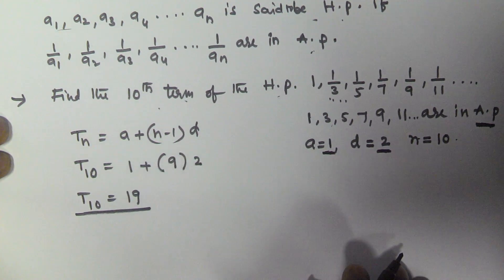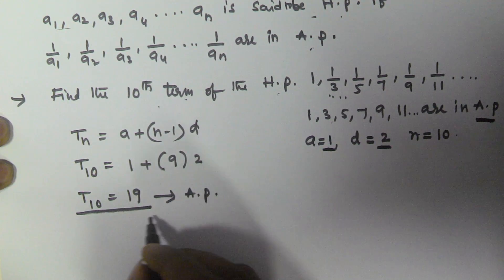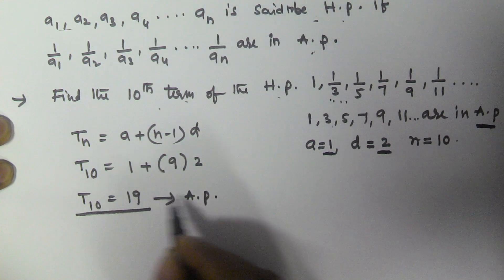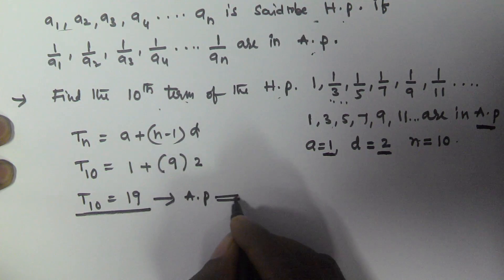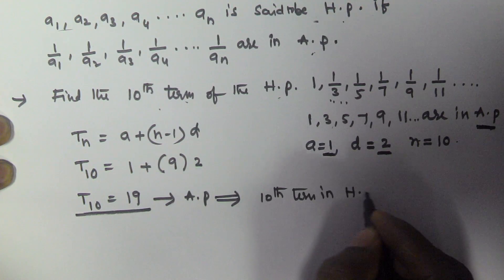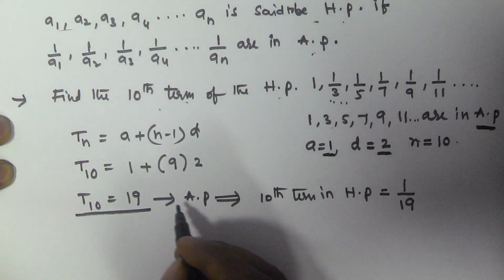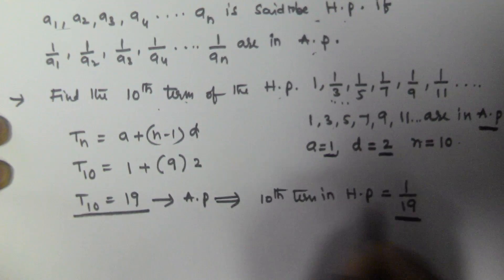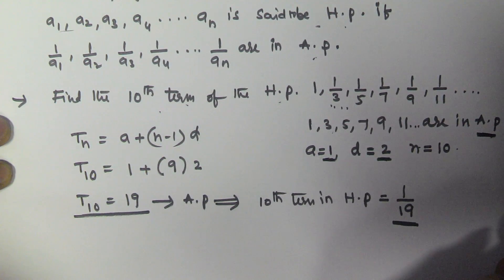The tenth term in arithmetic progression is 19. The tenth term in harmonic progression is the reciprocal of the tenth term in the arithmetic progression. So the tenth term in this harmonic progression is 1/19. I hope you got this one.